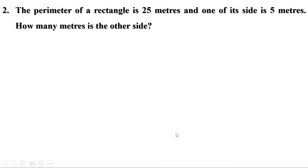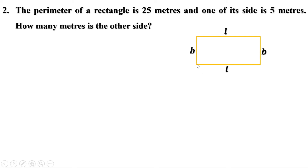Second problem: the perimeter of a rectangle is 25 meters and one of its sides is 5 meters. How many meters is the other side? Let us take a rectangle with length and breadth. Perimeter means the sum of all four sides, which is 2 times length plus 2 times breadth. Given that one side is 5 meters, the perimeter is 2 times one side plus 2 times 5, or 2 times one side plus 10.